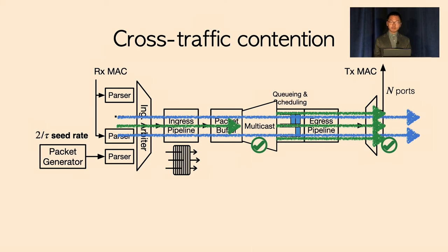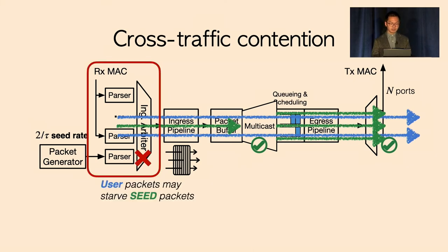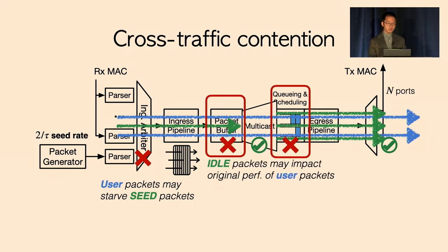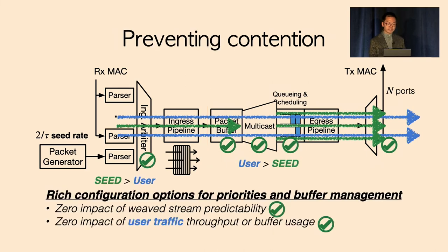As mentioned, there are multiple forms of contention. At the ingress parser, if the ingress parser queues for the external user packets are full, the schedule of seed packets may be delayed, impacting the predictability of the weave string later. And also second, even with the selective amplification approach that we described in previous slides, under worst cases there might still be contention between idle packets and user packets, which may impact the latency or throughput of user packets.